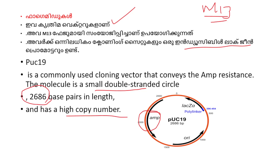In genetic engineering, these are the vectors: PBR322, bacterial artificial chromosomes, yeast artificial chromosomes, phagemids, and PUC-19.